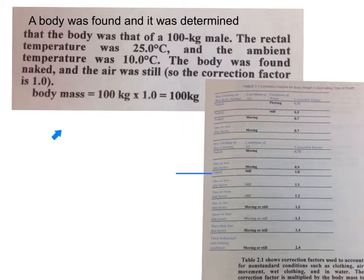The first thing we need to do is look at the correlation table. The body was naked and the air was still, so we have a correlation factor of 1. To get the body mass, we take the mass of the male times our correlation factor. So we have 100 kilograms times 1, giving us a body mass of 100 kilograms.